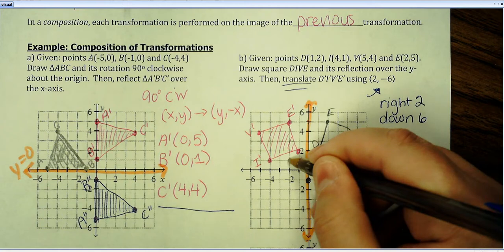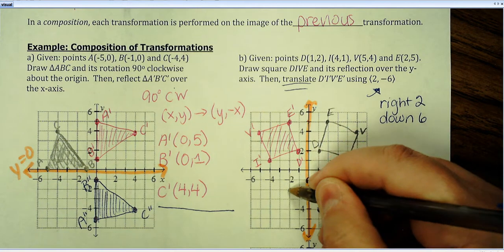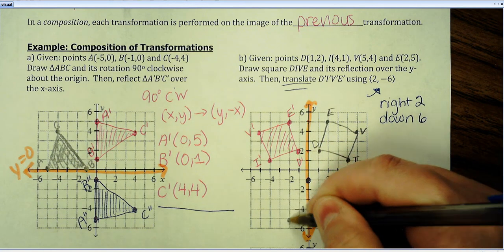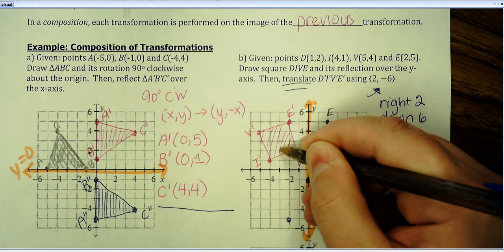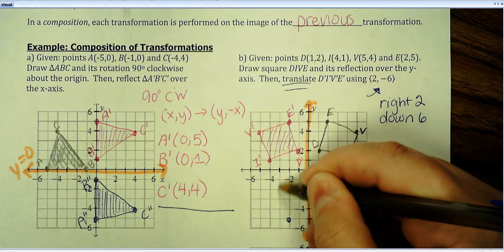And, same thing for the V prime here. Over two, down six.